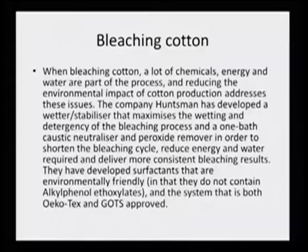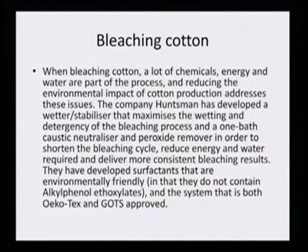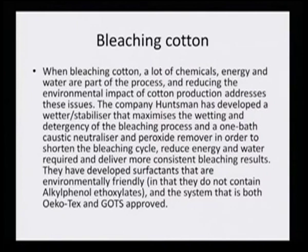While bleaching cotton, a lot of chemical energy and water are part of the process. The company Huntsman has developed a wetter stabilizer that maximizes wetting and detergency of the bleaching process in one bath — caustic neutralizer and peroxide remover — in order to shorten the bleaching cycle, reduce energy and water required, and deliver more consistent bleaching results. They have developed surfactants that are environmentally friendly, not containing alkylphenol ethoxylates, and the system is both Ecotex and GOTS approved.